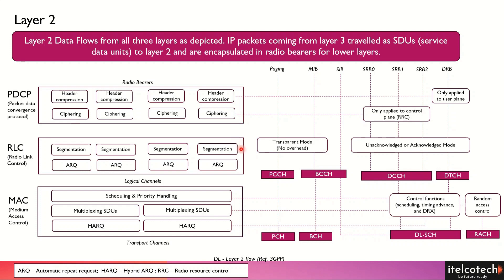Radio Link Control has two important functionalities: segmentation and concatenation, and error detection and correction. Any information coming as Service Data Units (SDUs) is converted into PDUs through segmentation and concatenation. Along with that, we have an error detection and correction mechanism called Automatic Repeat Request (ARQ). In RLC, many PDUs are made up of different SDUs coming from the upper layer.